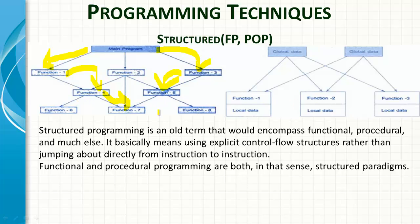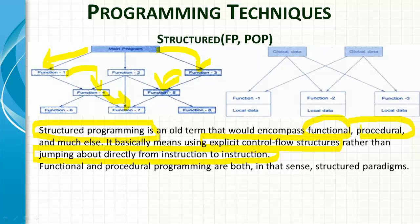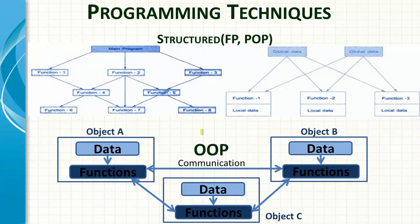Structured programming was a combination of functional as well as procedural programming, and much more. It basically means explicit control flow structures rather than traditional jumping directly from instruction to instruction as in machine level programming. Instead, we divided code into different reusable components and moved from one control flow structure to another, handling data in between. Functional and procedural programming are both part of this structural paradigm.